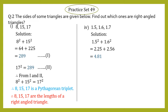Now let's take the square of the largest side. The largest side is 1.7, so 1.7² = 1.7 × 1.7 = 2.89. This can be taken as equation 2. What do we observe from equation 1 and equation 2? The value in equation 1 is 4.81 and in equation 2 we have 2.89 — they are not equal.